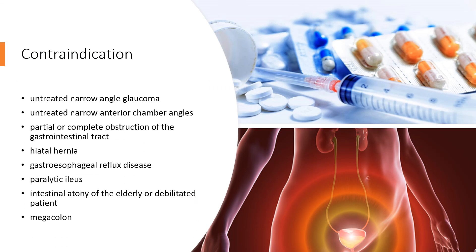Contraindications: Oxybutynin chloride is contraindicated in patients with untreated narrow-angle glaucoma and in patients with untreated narrow anterior-chamber angles, since anticholinergic drugs may aggravate these conditions. It is also contraindicated in partial or complete obstruction of the gastrointestinal tract, hiatal hernia, and gastroesophageal reflux disease.